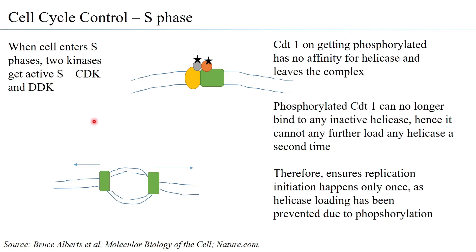An active CDT1 is made inactive by phosphorylation, carried out by S-CDK and DDK. By ensuring the helicase cannot be loaded again, replication is ensured to happen only once. If helicases could be re-loaded, re-replication would occur, but because CDT1 can no longer load the helicase, this is prevented.